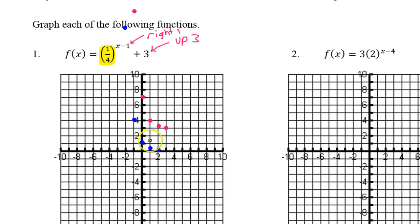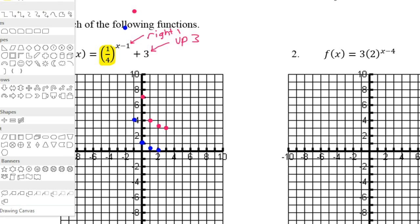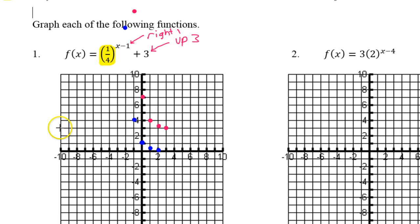Now let's talk about the asymptote. The asymptote was this horizontal line at the x-axis. If I move the graph up 3, that's going to give me a new asymptote, and the new asymptote is at 3. So the new asymptote will be here at y equals 3.